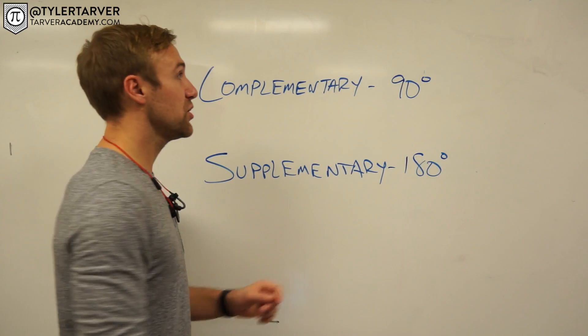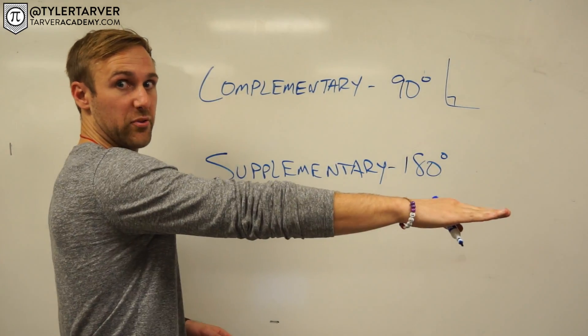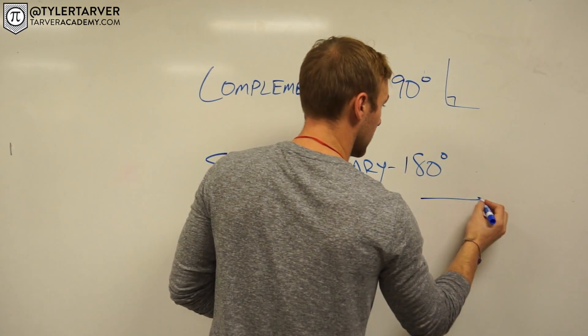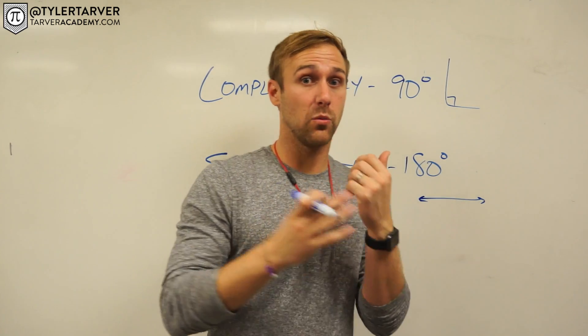Now, 90 degrees makes a right angle. 180 degrees makes a straight line. Okay, now we're talking about angles being paired up here.